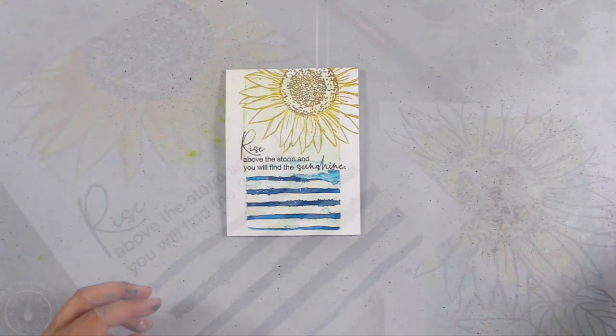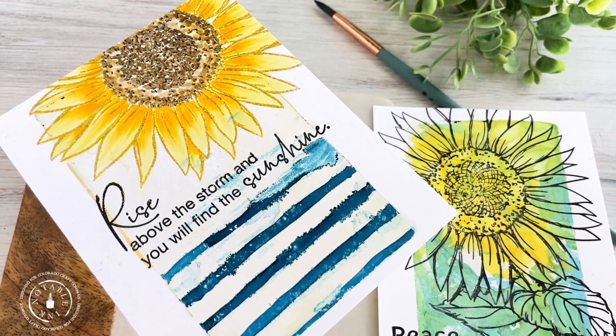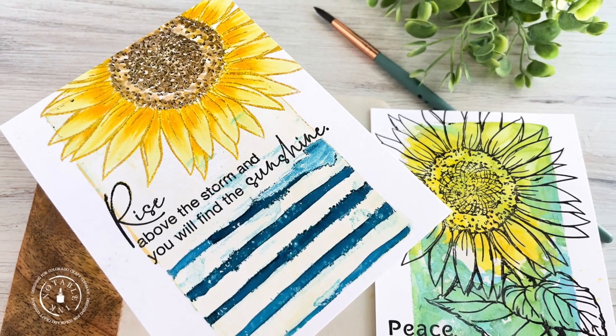I'll go ahead and heat set that. This card needed a little more oomph. So off camera, I grabbed two Copic markers and added a little color to the petals to give it more contrast and a little more brightness and color.